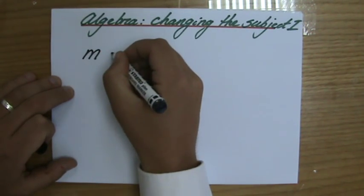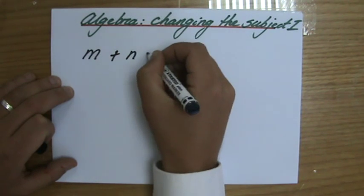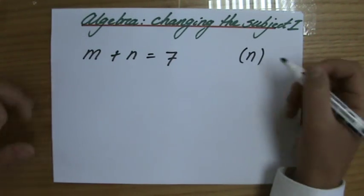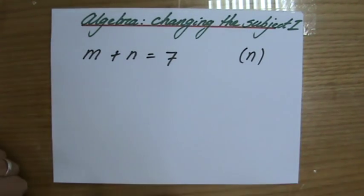So let's say I have m plus n equals 7, and they ask me, make n the subject. They usually put it in brackets behind, so make n the subject.